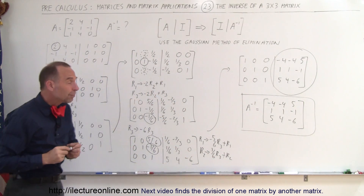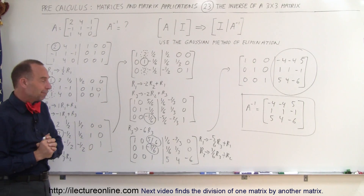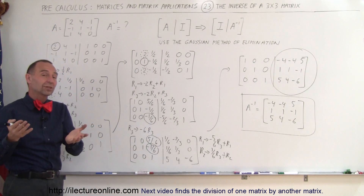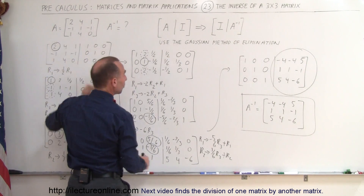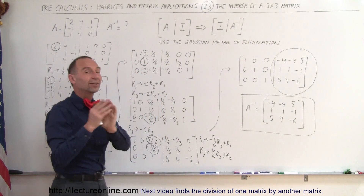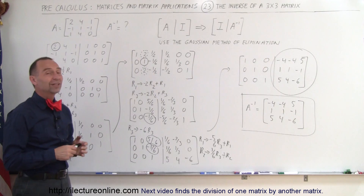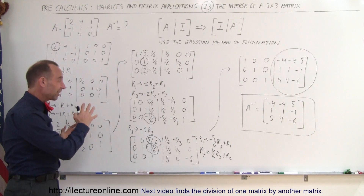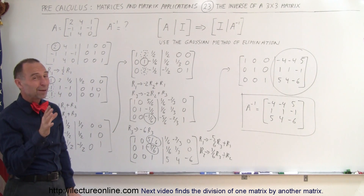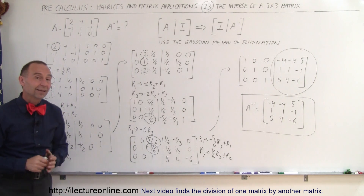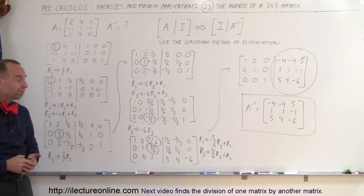It's a lengthy process and it's really easy to make one single mistake that throws everything off. When you're done and can't check the answer in the back of the book, you can multiply the A matrix with the inverse A matrix — you should get the identity matrix. If you don't, the answer is wrong. Another clue is when numbers start getting really bad fractions that go nowhere — that usually means you made a mistake and may want to start over. That's how we take a 3x3 matrix and find its inverse using the Gaussian method of elimination.